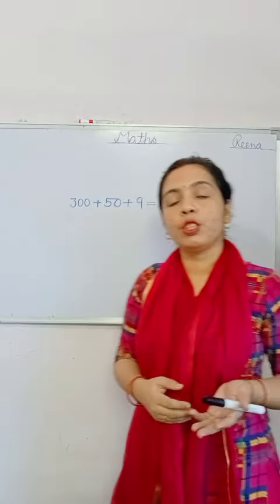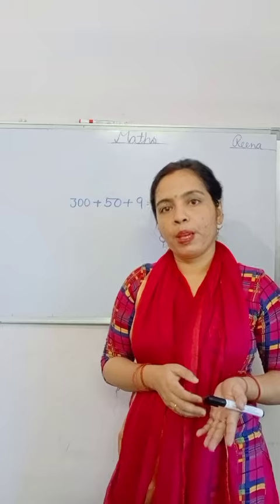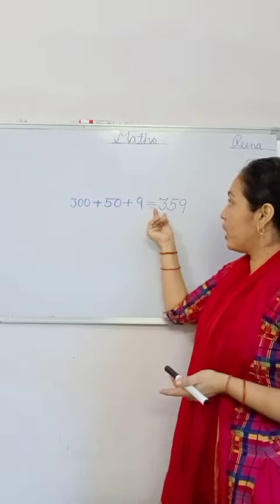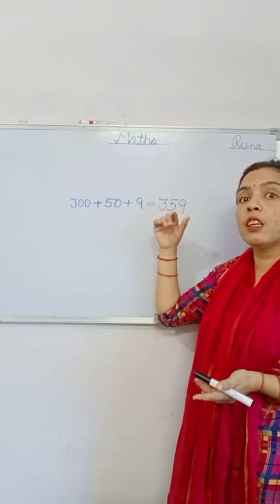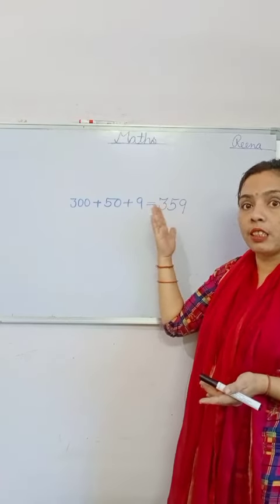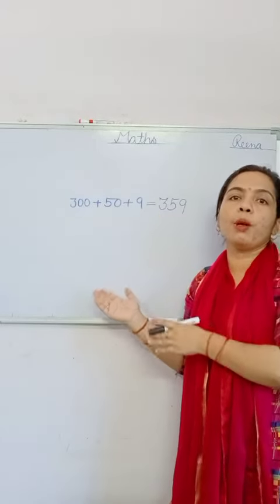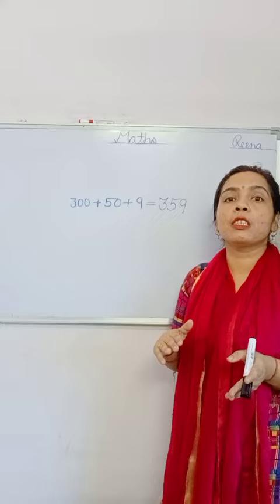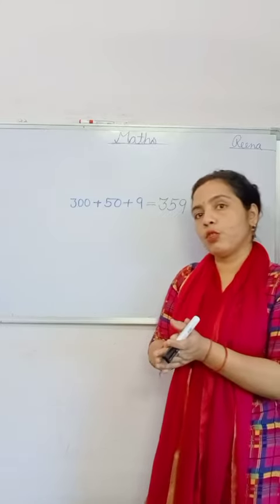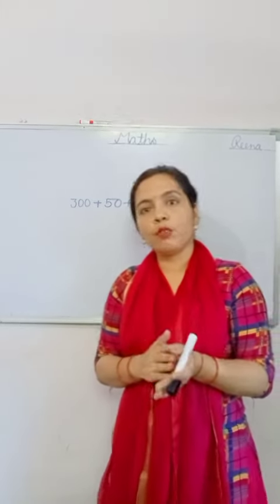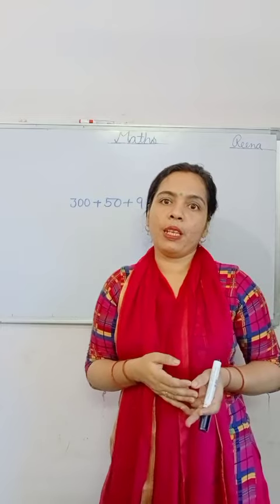Students, watch your next video related to expanded form, short form, place value, and place. Also, 3, 5, 9 — what are these? These are digits. Yeh sab digit hain. Aur yeh inki face value ko bhi batate hain. Face value means jo digit hai uski face value wohi hogi. Watch your next video related to expanded form, short form, place value, face value, and place.